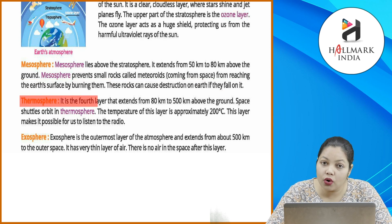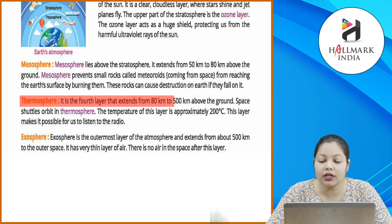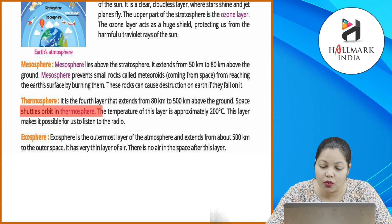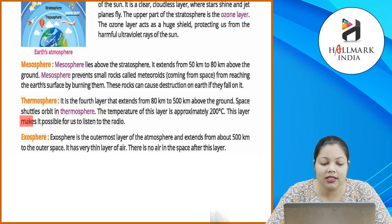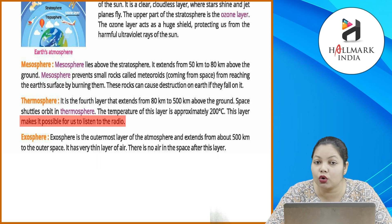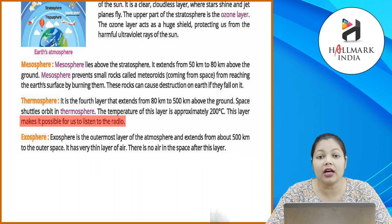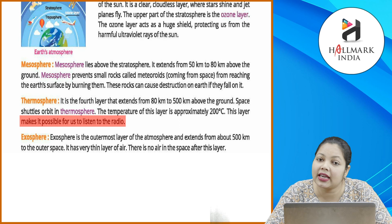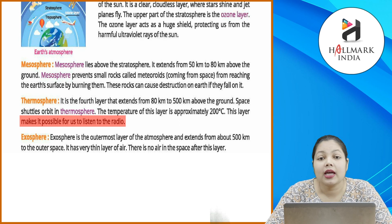Thermosphere: it is the fourth layer that extends from 80 km to 500 km above the ground. Space shuttles orbit in the thermosphere. The temperature of this layer is approximately 200 degrees Celsius. This layer makes it possible for us to listen to the radio. Thermosphere jo hai, wo aapki fourth layer hoti hai — yeh 80 km se lekar 500 km tak hoti hai. Is layer par sabse zyada heat hoti hai — yahan ka temperature 200 degree Celsius tak ka hota hai. Is layer ki wajah se aap radio sun sakte hain.